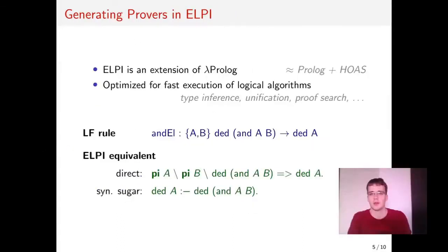We decided to create the provers in ELPI, which was created among others by Claudio, who's one of the authors of this paper. ELPI is an extension of lambda Prolog, and the reason that we want lambda Prolog instead of standard Prolog is that it supports, among other things, higher order abstract syntax. We need higher order abstract syntax for naturally representing for example quantifiers and other kinds of bindings. ELPI was used for implementing different kinds of logical algorithms like type inference and unification, and we want to use it for proof search, so it's exactly the kind of thing we need.